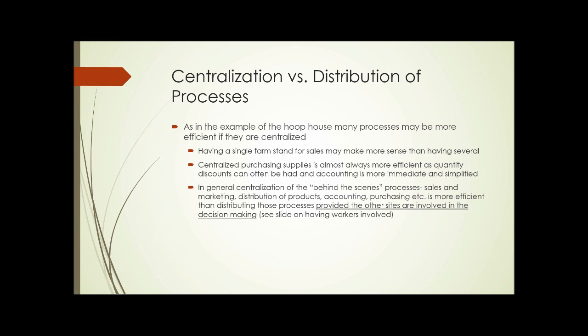In general, centralization of the behind-the-scenes processes — sales and marketing, distribution, accounting, purchasing — is more efficient than distributing those processes, provided the other sites are involved in the decision making. Just telling workers at one site what's going to happen can be less efficient than having them involved in decisions about what's going to be planted, then purchasing everything centrally to take advantage of quantity discounts and efficiencies.